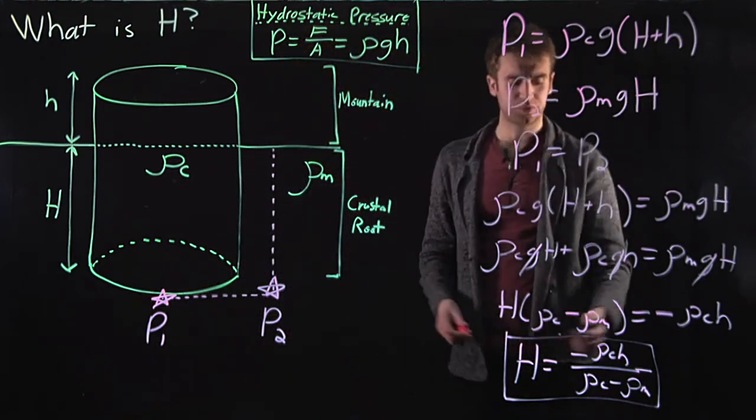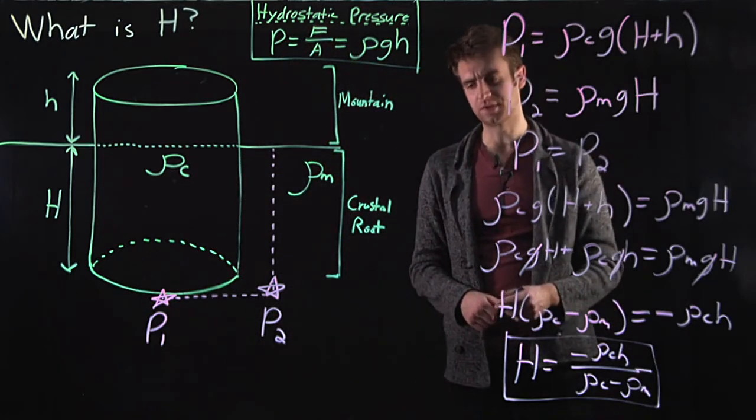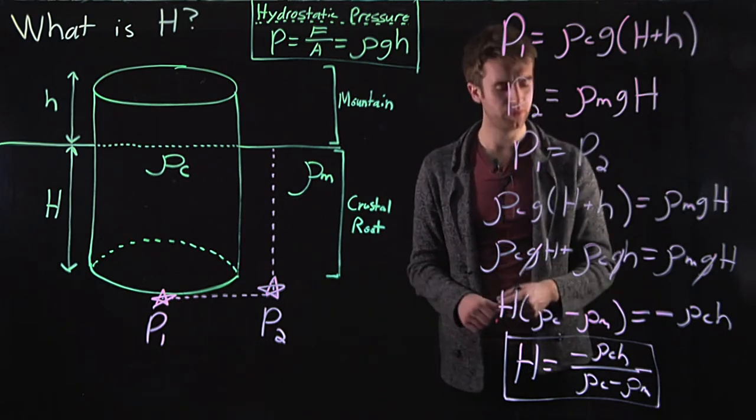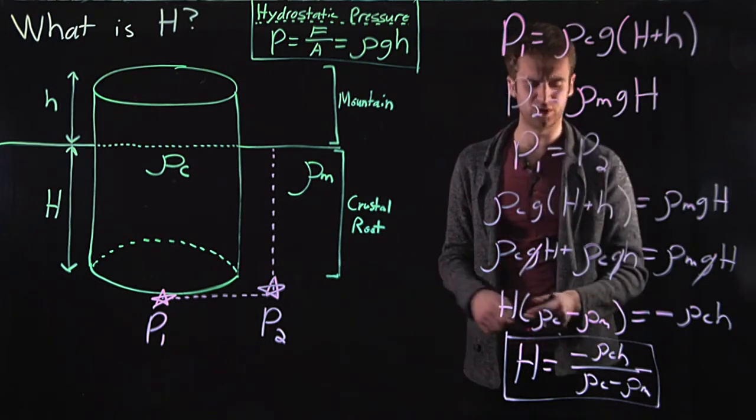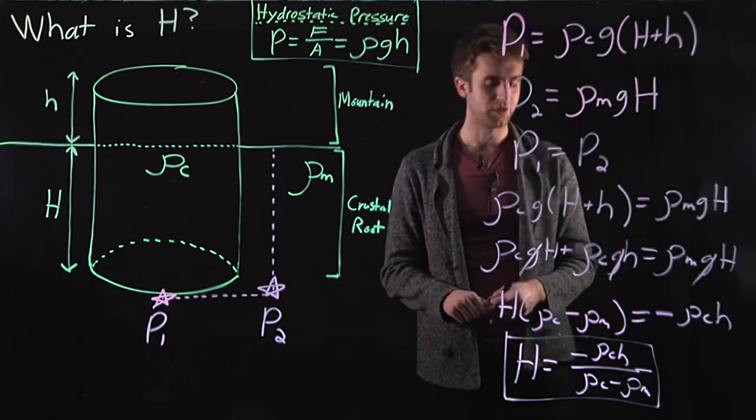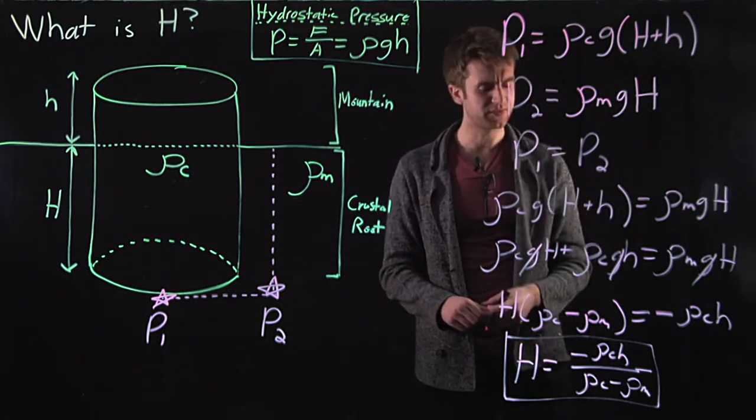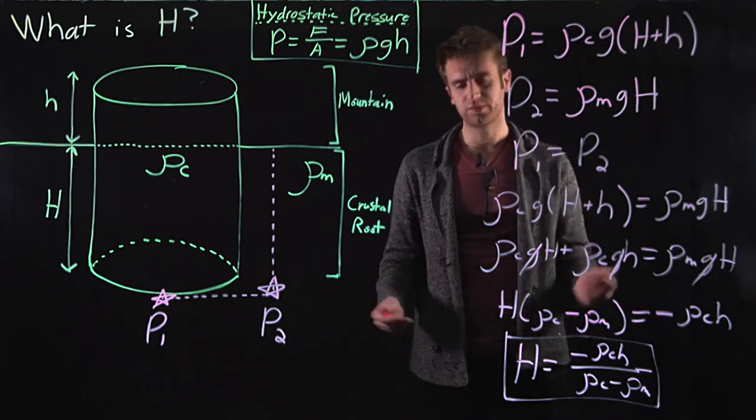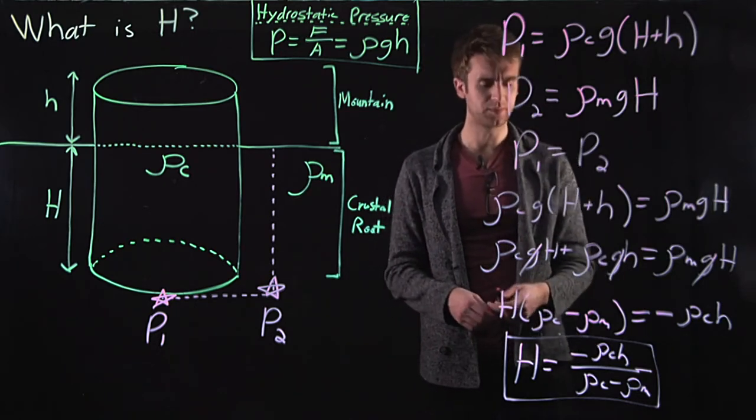So, you know, a typical rho c, something like 2700 kilograms per meter cubed. A typical rho m, you know, 3300 kilograms per meter cubed, something like that. And let's say, you know, the height of the Himalayas, maybe six kilometers.